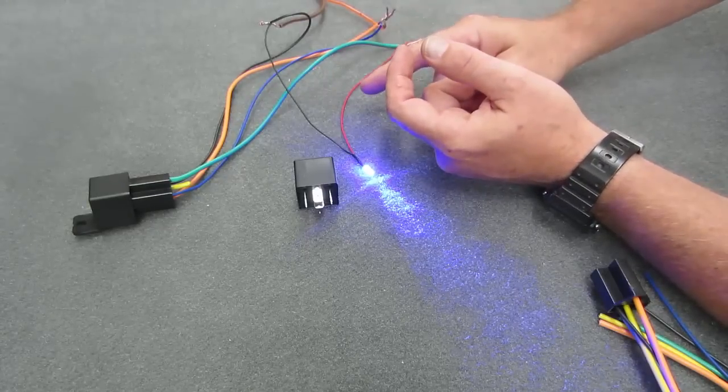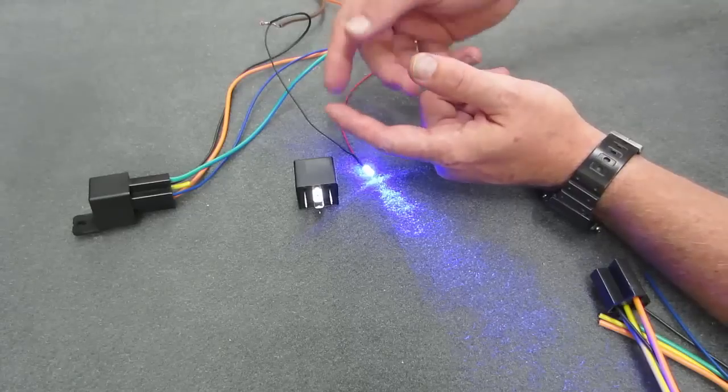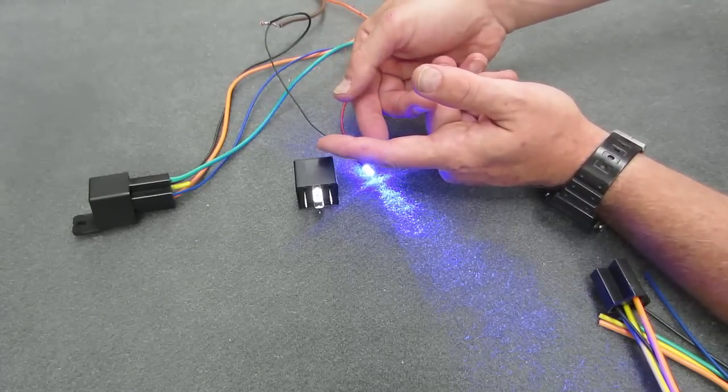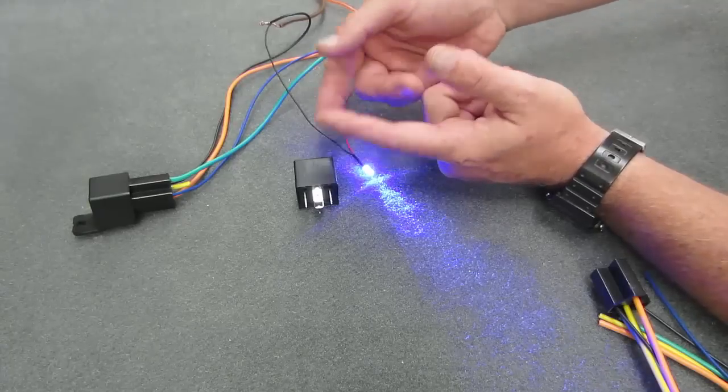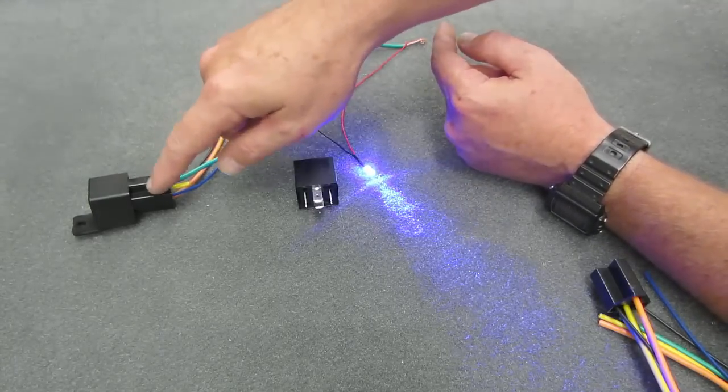The ignition wire in most vehicles actually switches to 12 volts during accessory, crank, and on during ignition. When the key is off, it actually reverses polarity and it rests at ground. So I'm going to use that to trigger my coil with my relay.